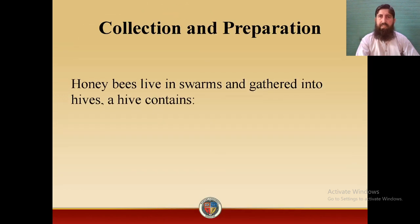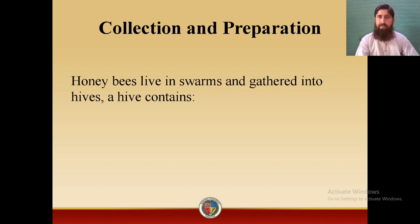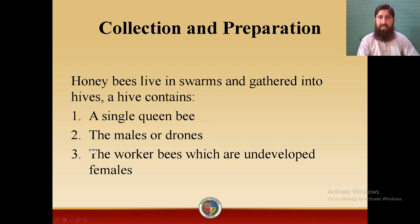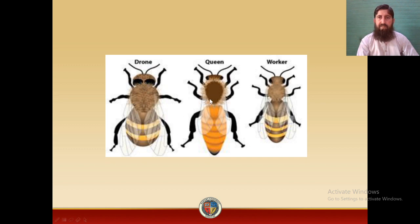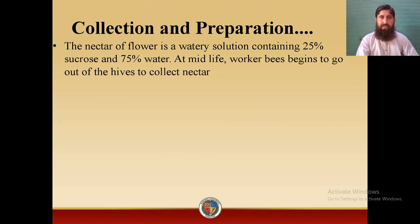Collection and preparation: how honey is produced by honey bees and how we collect honey from the honeycomb. Honey bees live in swarms and gather into hives. A hive contains three types of bees: a single queen bee, the males which are drones, and the worker bees which are undeveloped females. The nectar of a flower is a watery solution containing 25% sucrose and 75% water. Nectaries are small pockets present beneath the corolla of the flower.